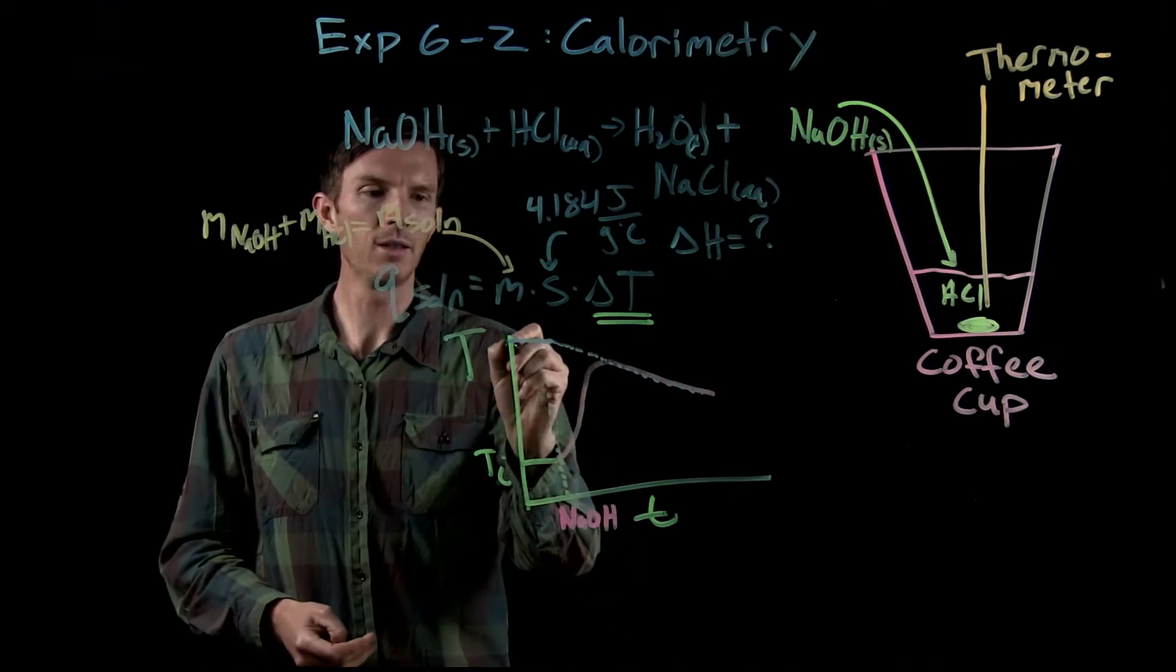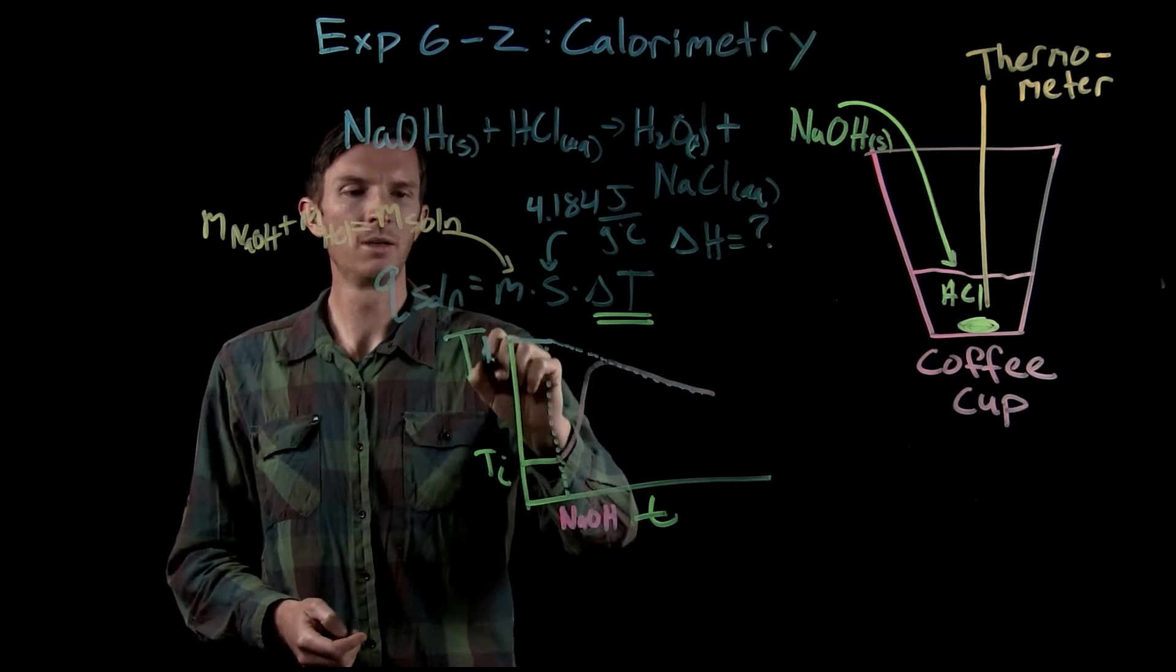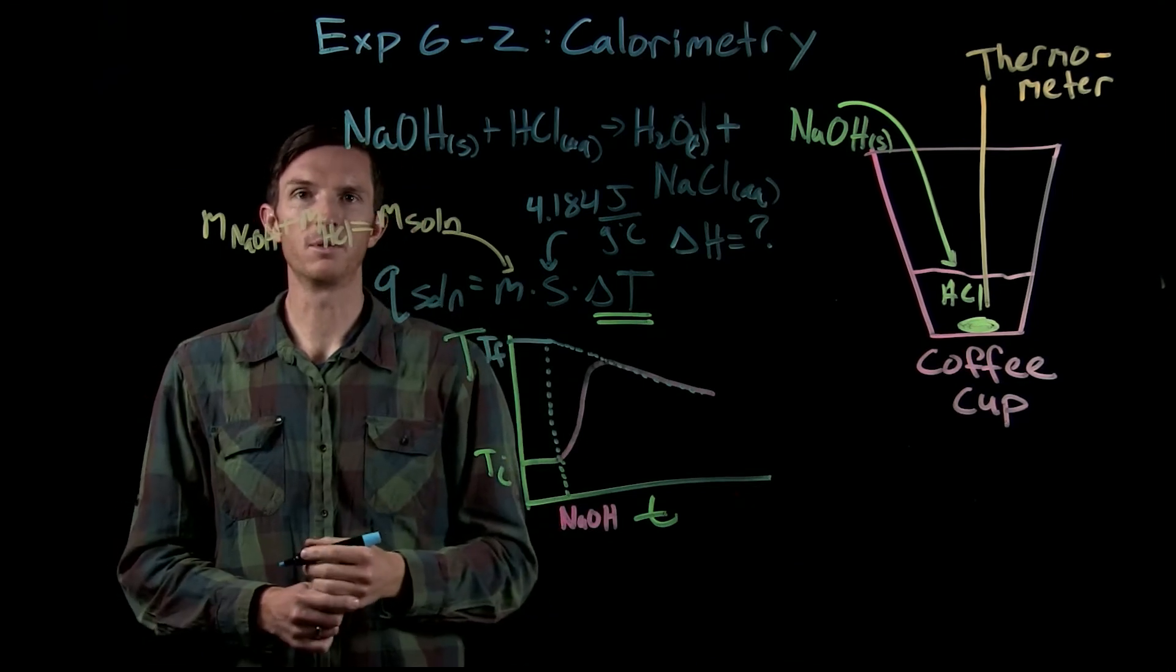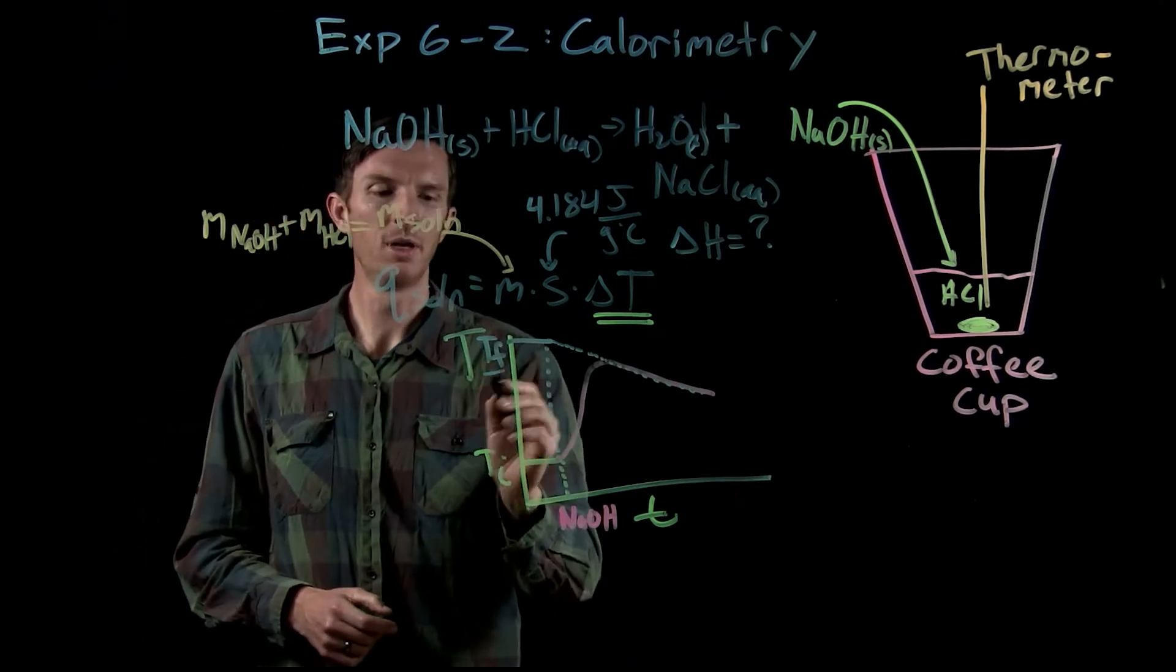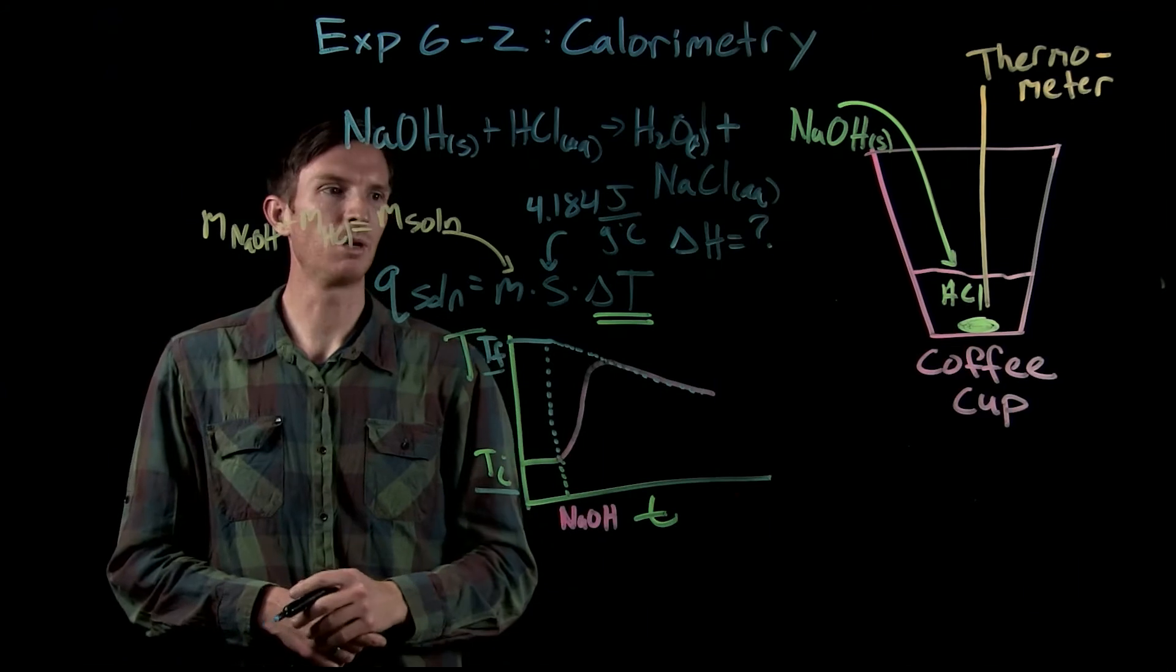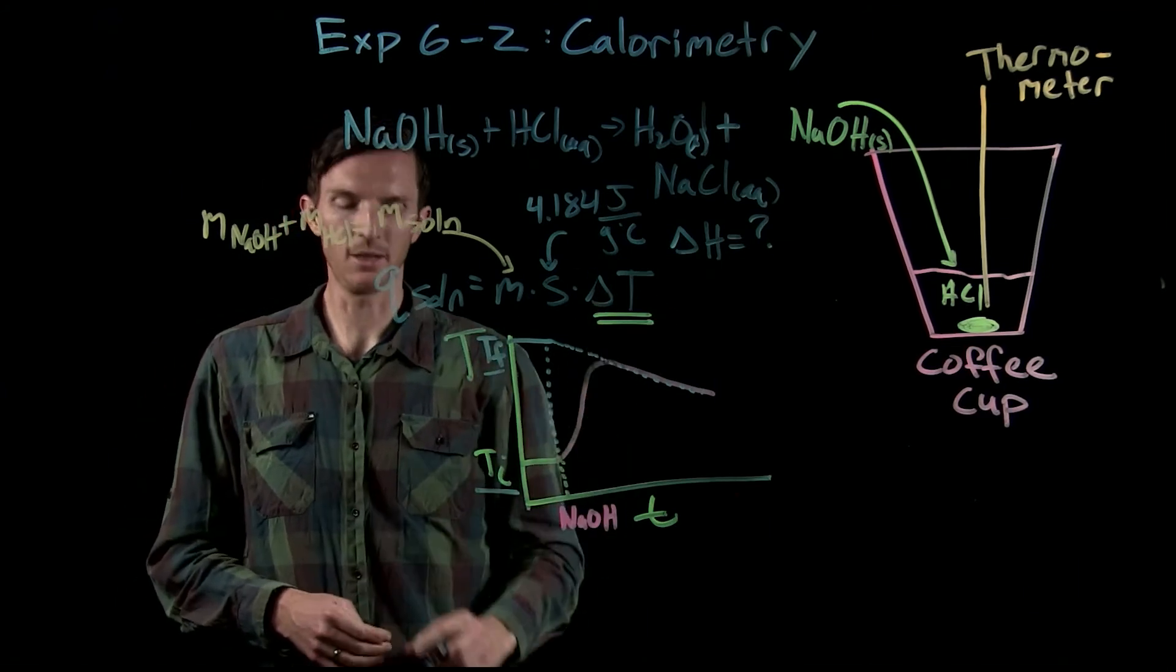Right here, that temperature where those two lines meet, that's what we're going to call our final temperature. So now we'll have our final temperature, we'll have our initial temperature, we can go ahead and calculate delta T.